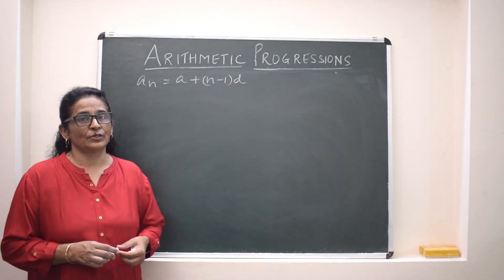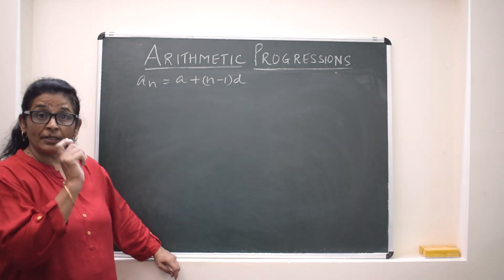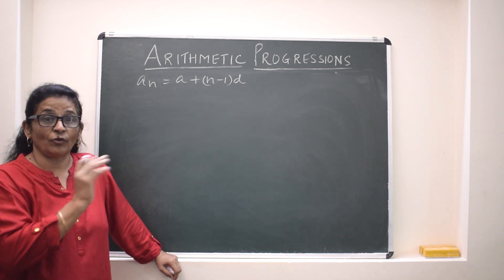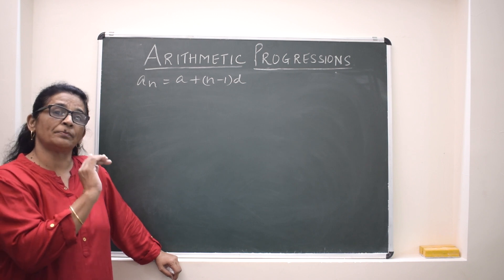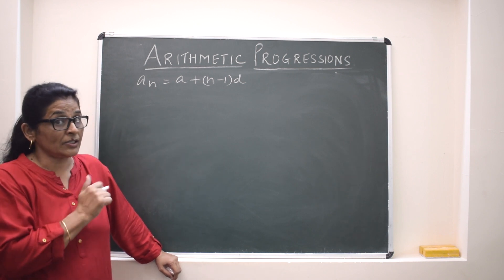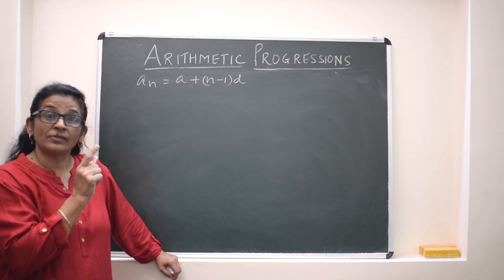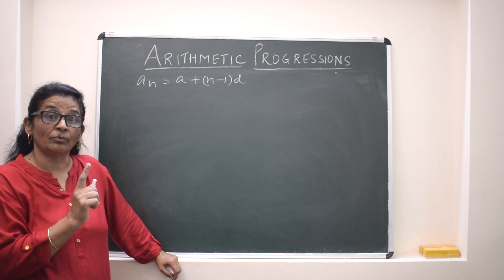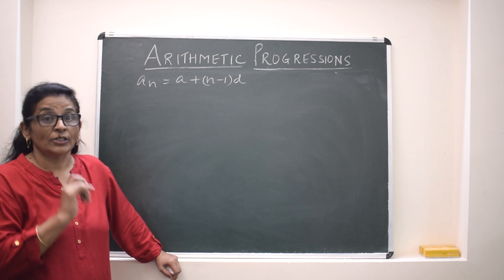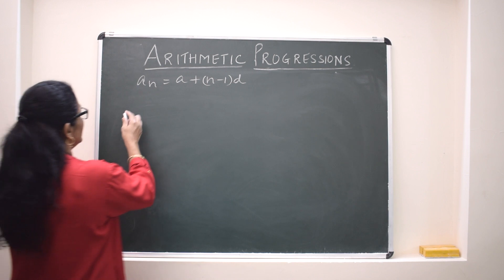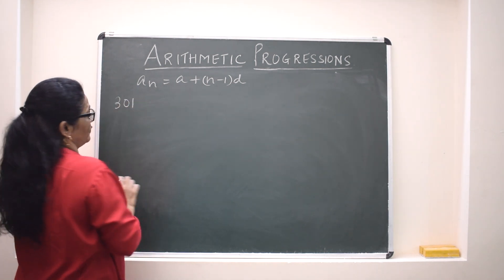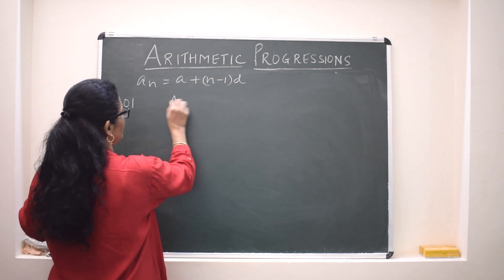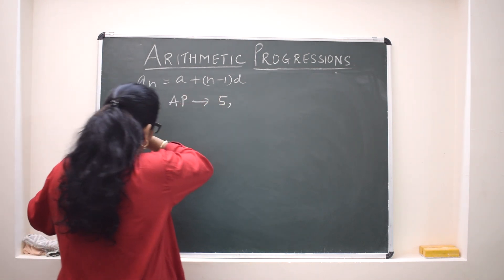Now we will see a question in which they ask whether a particular number falls in a given AP or not. For that we assume that particular number is the nth term. We then find N — and the condition is that N should not be fractional or negative. For example: is 301 a term of the AP 5, 11, 17, 23, and so on?